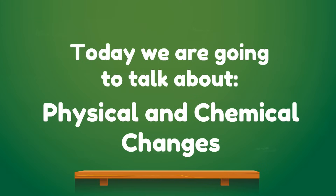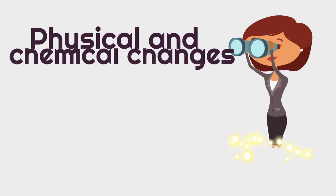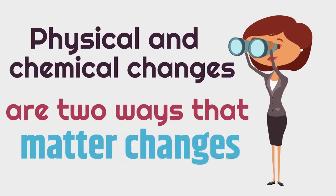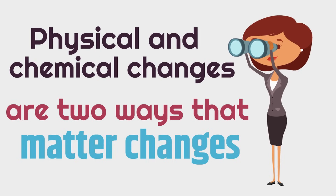Today we are going to talk about physical and chemical changes. Physical and chemical changes are two ways that matter changes. Remember, all the stuff in the world is matter — anything that takes up space. So physical and chemical changes are two ways that all the stuff around us, matter, changes.